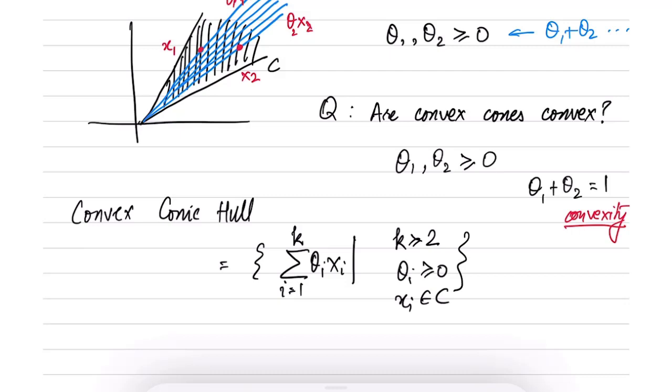There is a lot more to these definitions and it would be better if you thought about them a little bit and try to relate them to each other, come up with very simple examples of what a convex conic hull of two points would look like and so on.